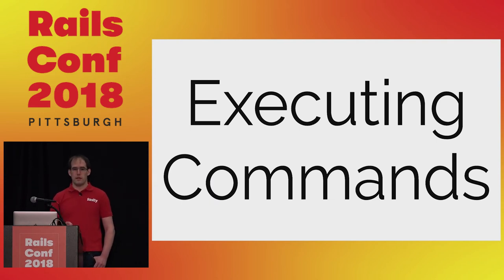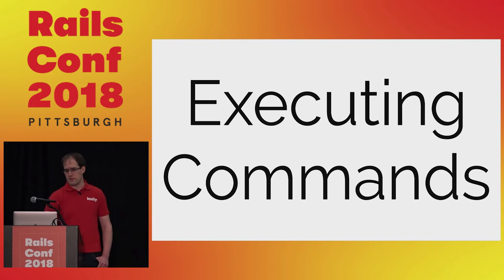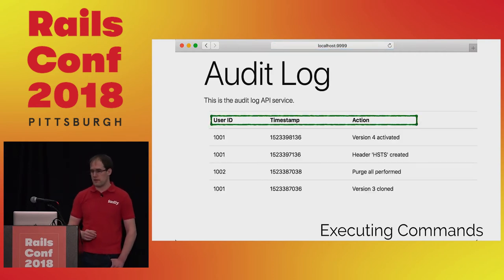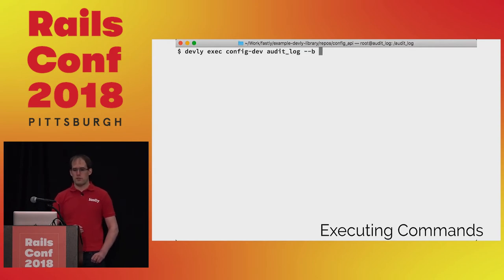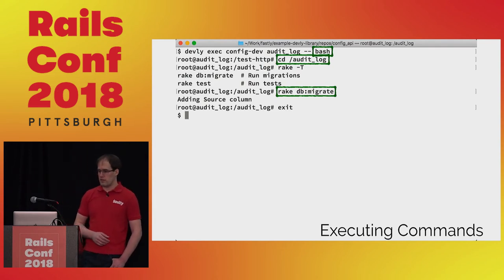So far we've worked outside the container, but sometimes we need to run commands from inside the container where all our dependencies are loaded. Let's pretend we're on the audit log team working on adding a source column to our database. We need to run a migration we've just finished writing. We can't do this from the host OS because none of our application gems are available — they're only installed inside the container. Devly exec lets us run commands inside the container. We start a bash shell to explore, then change to the audit log source directory, run rake -T to check we're in the right place, and then run the migrations. The migration confirms it added the source column, so we switch back to the browser to verify.